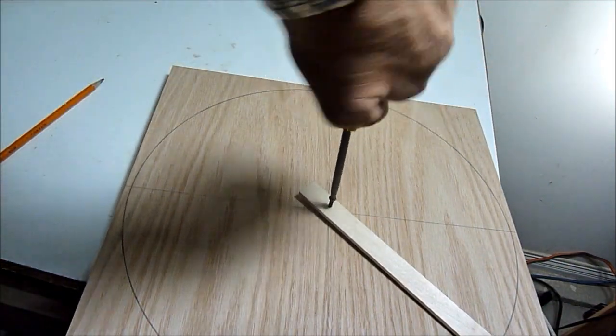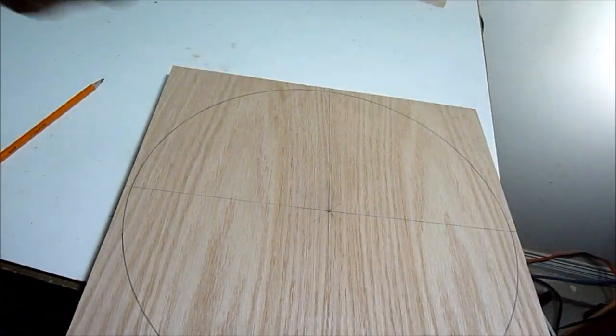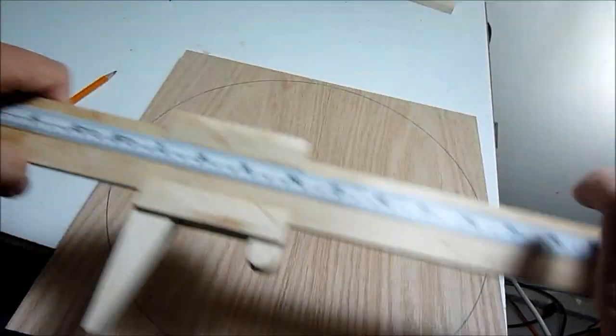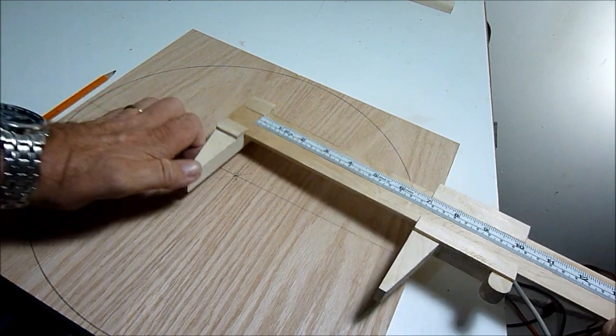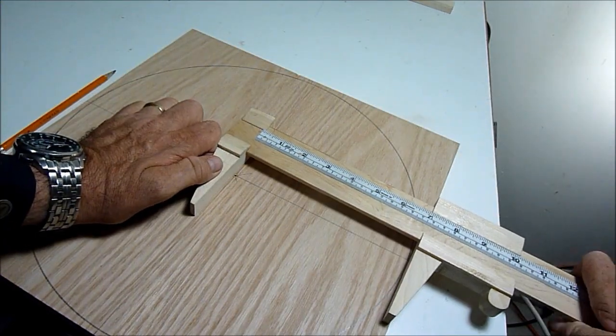And next I want to divide the circle into five. So to divide by five I will take the radius. I'll use my large wooden caliper. So I take the radius.